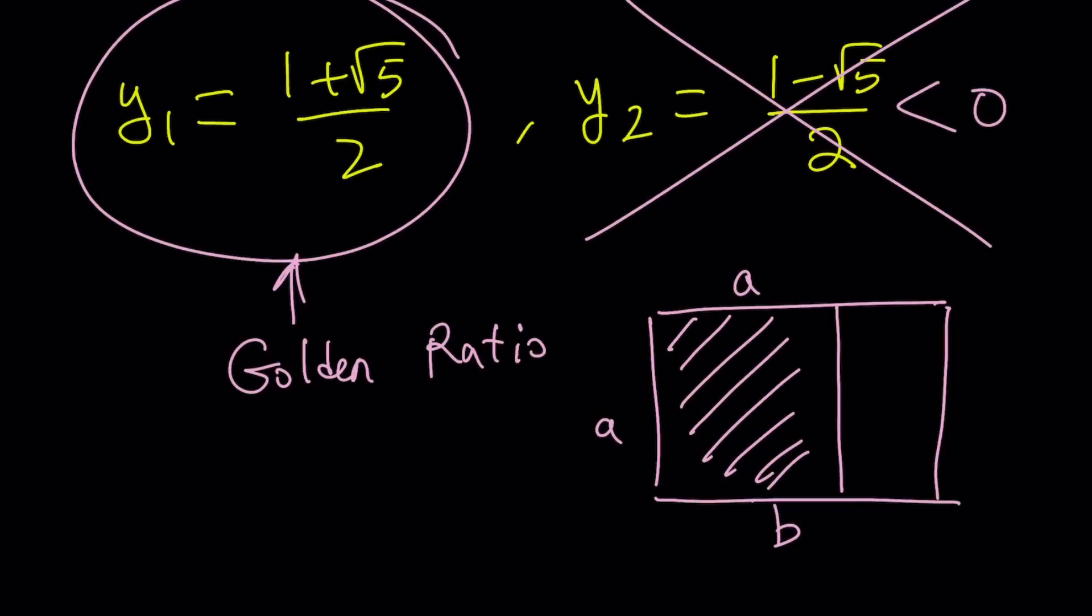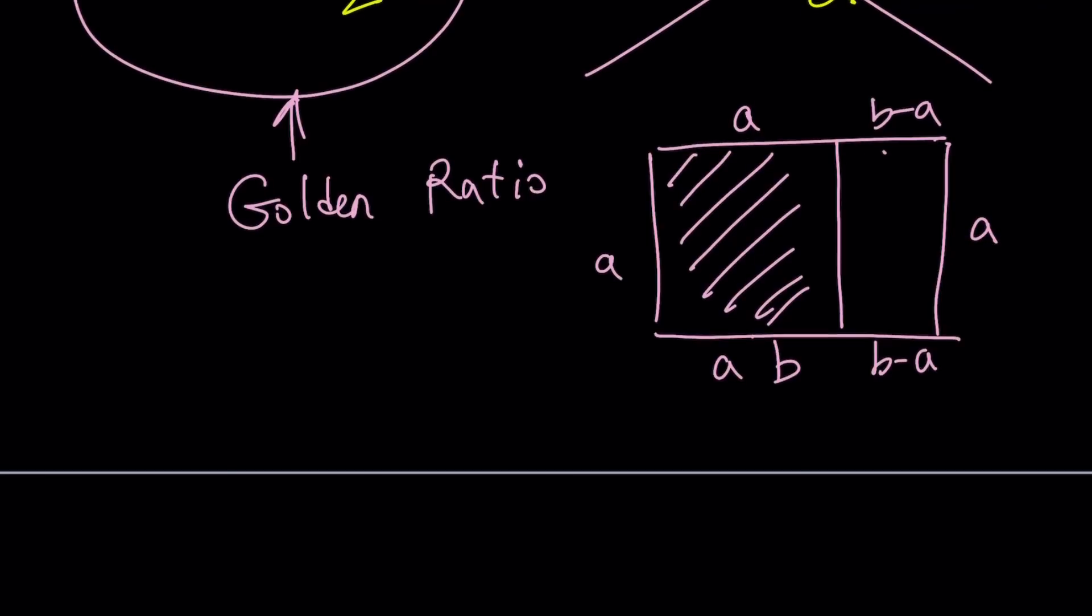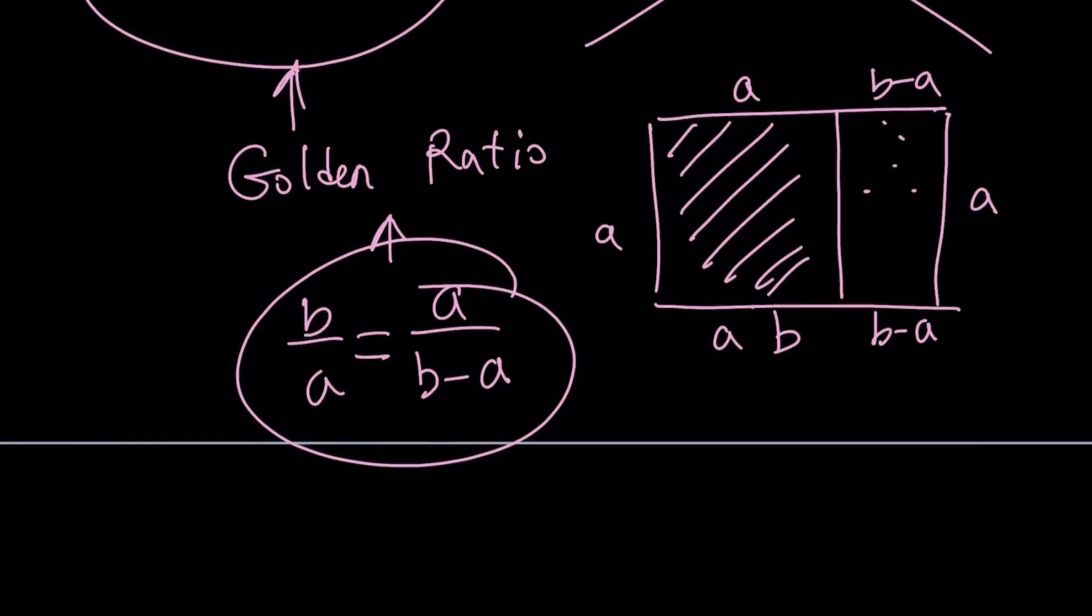You get a rectangle that has the same ratio of the side lengths as the original one. Make sense? So in other words, the original ratio was b to a in the larger rectangle. In the smaller one, it is going to be a over b minus a. And this ratio, b to a ratio, is called the golden ratio. And golden ratio actually appears in so many different places in nature, in math, in other sciences. It has some very interesting properties.